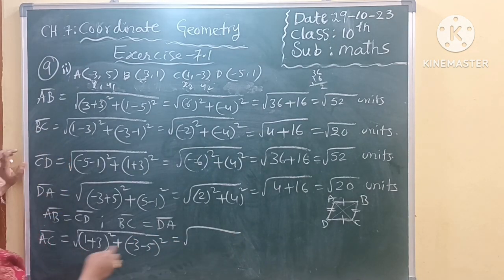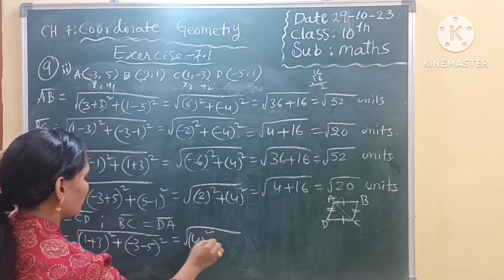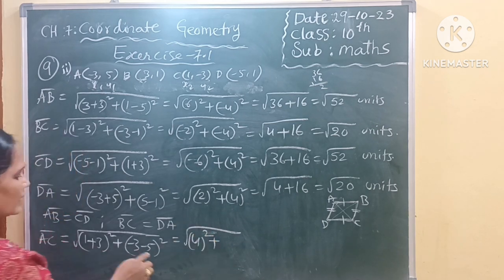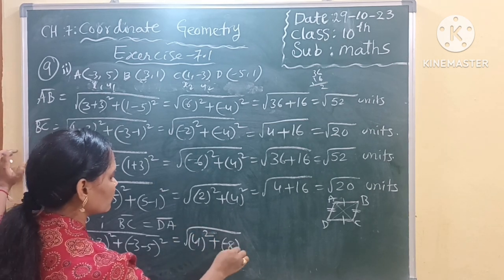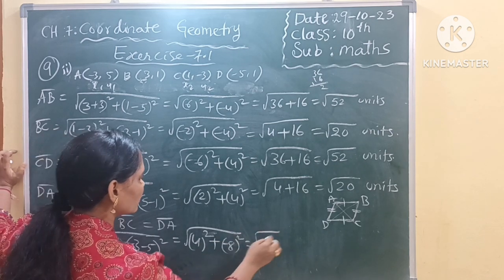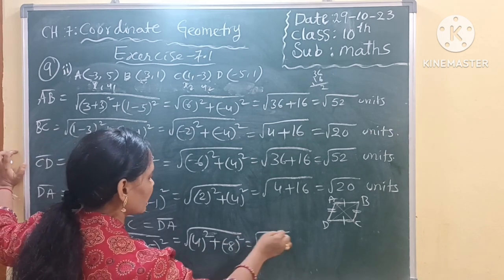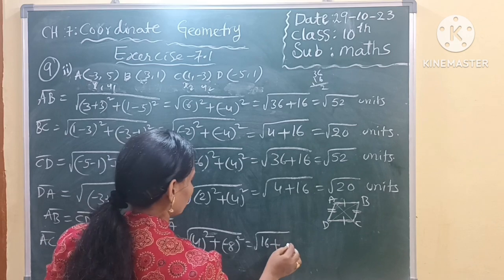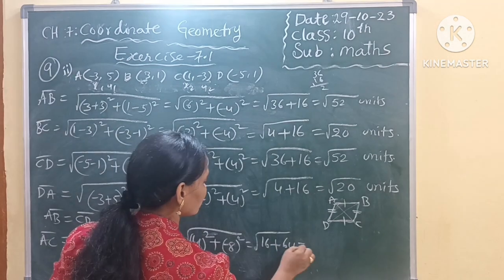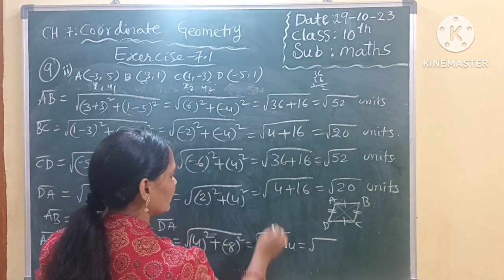Square root of 4 square plus minus 8 whole square. 16 plus 64.